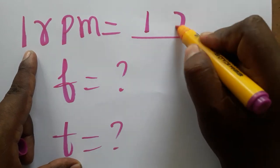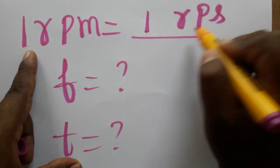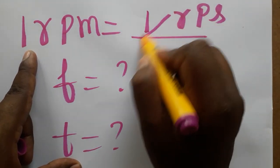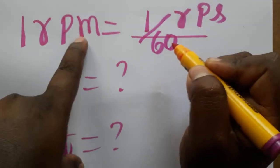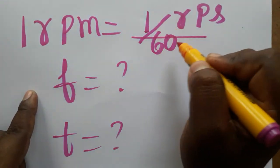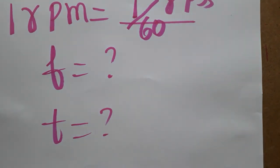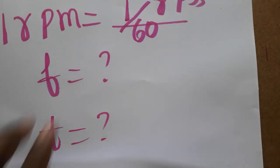I am changing RPM to RPS - rotations per second. So divide by 60 because one minute is 60 seconds. So 1 divided by 60. We will get the frequency.